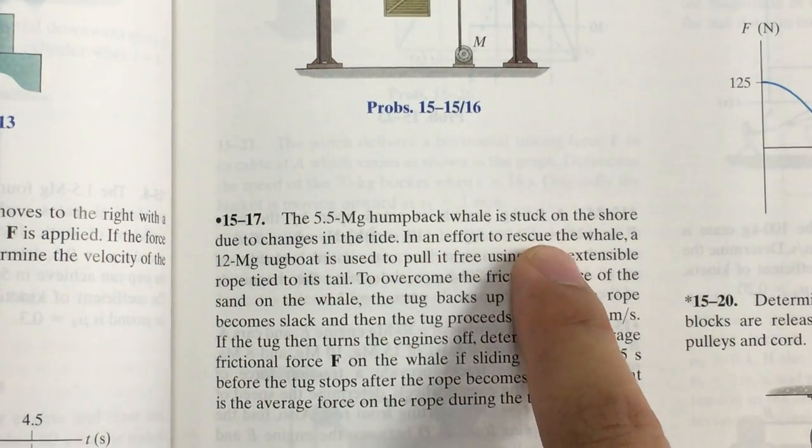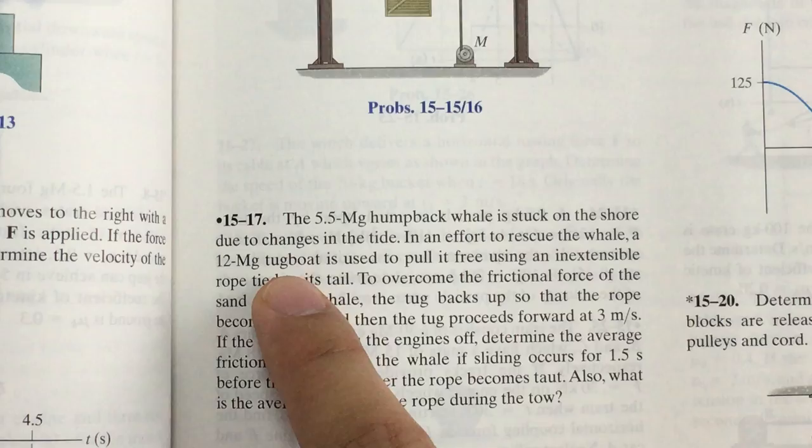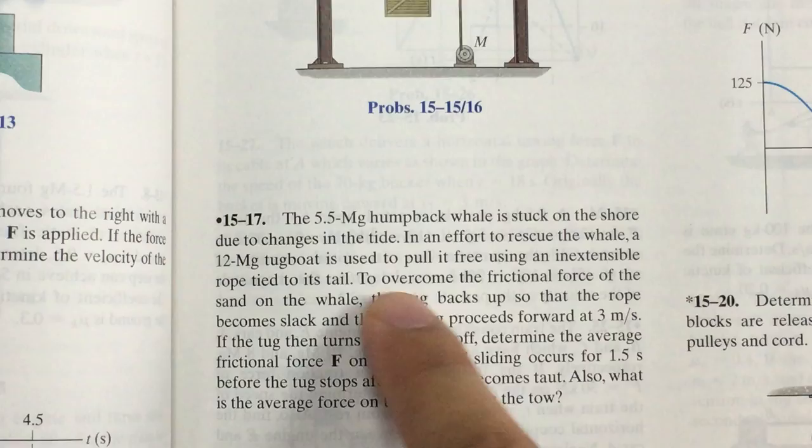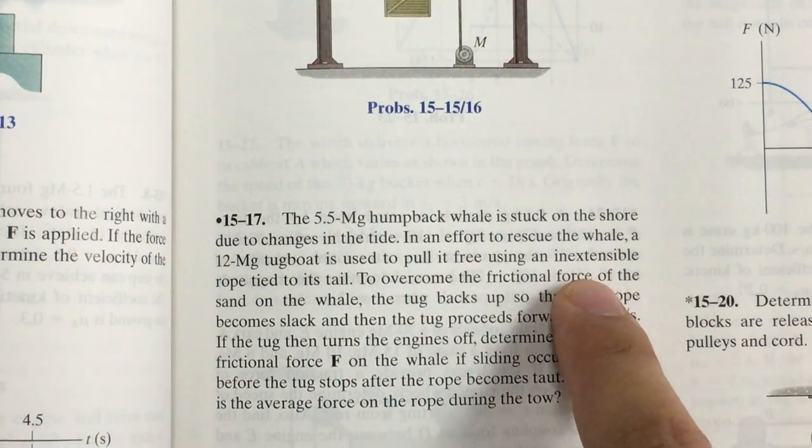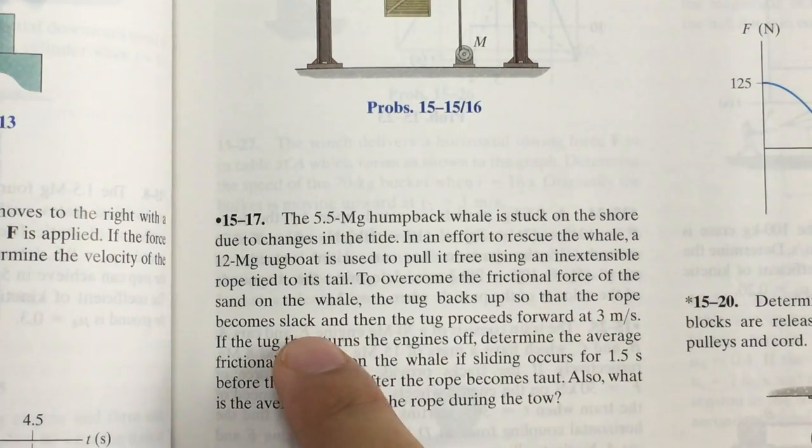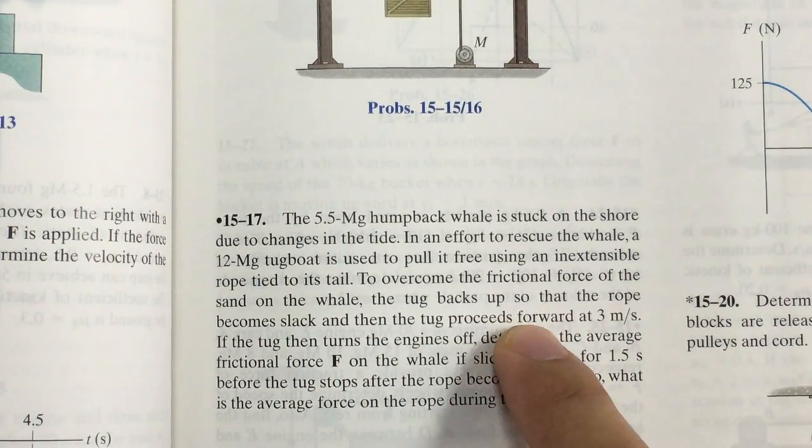In an effort to rescue the whale, the 12 megagram tugboat is used to pull it free using an extensible rope tied to its tail. To overcome the frictional force of the sand on the whale, the tug backs up so that the rope becomes slack and the tug proceeds forward at 3 meter per second.